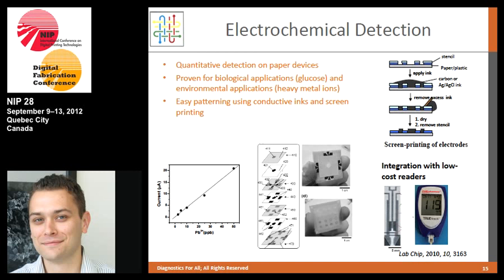For electrochemical detection, sometimes it's useful to get a specific quantitative number. We do this by combining patterned paper with patterned electrodes using simple screen printing of conductive inks like silver, silver chloride, or carbon. Really interesting work from the Whitesides Lab has built paper-based devices that fit inside low-cost digital readers like a glucometer — this one from CVS costs about $5. By building a paper device that fits into it and tweaking the chemistry on the paper, you can do assays beyond glucose, all at very low cost and still get quantitative information.